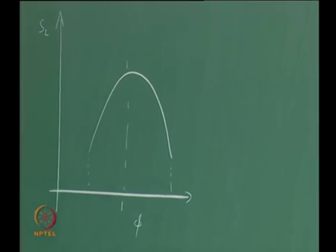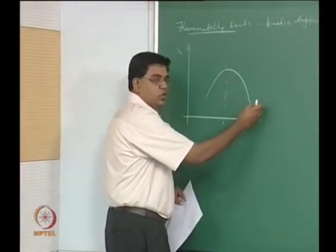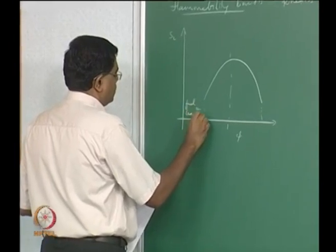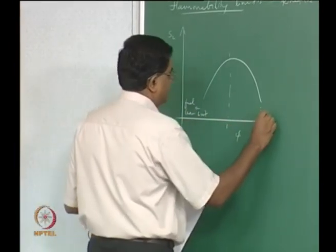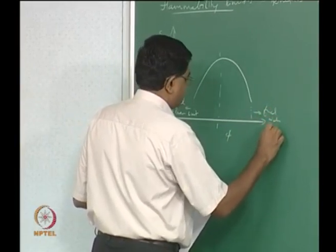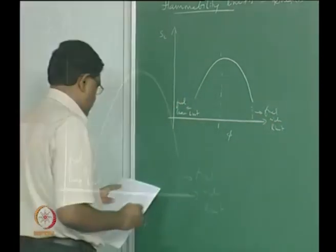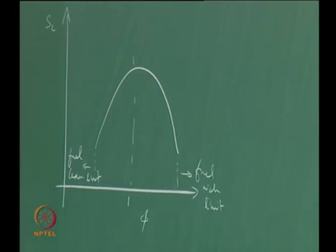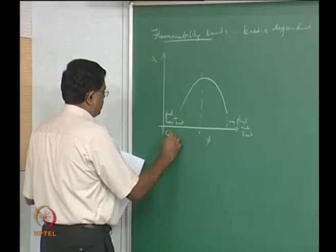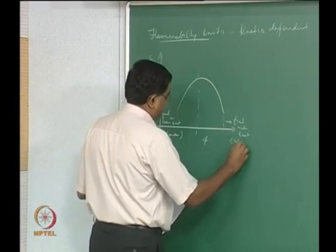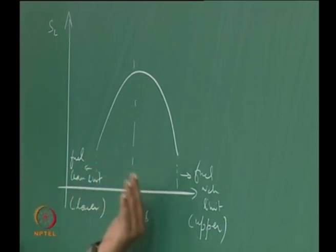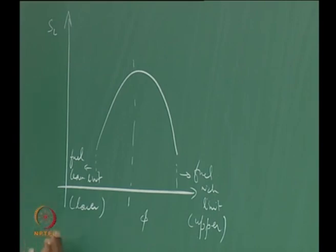It stops there, which means you now have a fuel lean limit and a fuel rich limit. This is typical of most fuels. The lean limit is sometimes referred to as the lower limit and the rich limit as the upper limit — lower and upper meaning the lower value of phi and the higher value of phi, or lower versus higher fuel-air ratio.